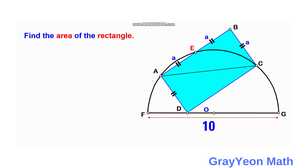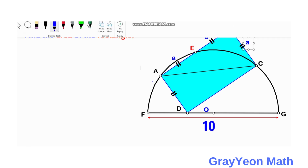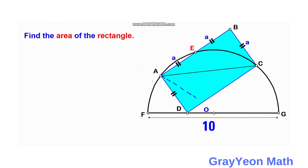Next, we draw a line from point A to the center of the circle, O, and from C to O. Notice that these two lengths are actually the radius of this semicircle. Since the diameter is 10, the radius will be 5, so these two lengths will be 5 units each.